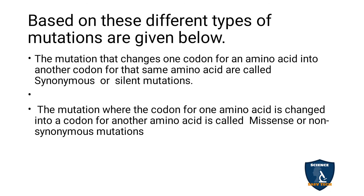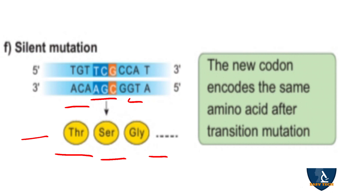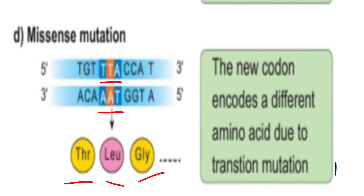The mutation where the codon for one amino acid is changed into a codon for another amino acid is called missense or non-synonymous mutation. You can see in the diagram that one nitrogen base is changed, forming a new codon that encodes a different amino acid — for example, AGC changes to AAT due to missense mutation, forming a new amino acid.